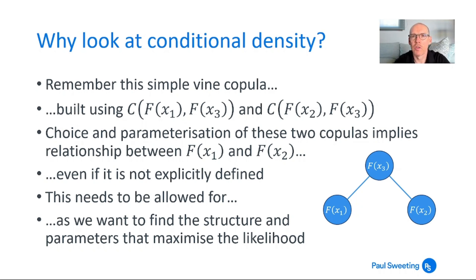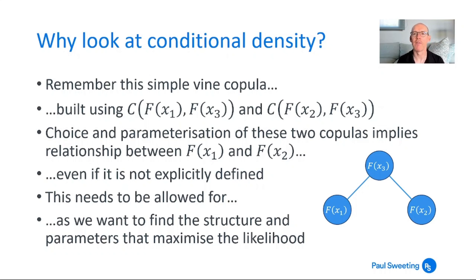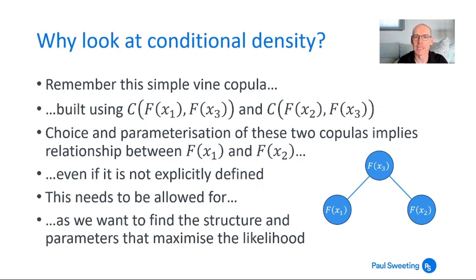So why might we want to look at conditional density? The easiest way to understand this is to look at a very simple vine copula we've already talked about a little, which starts with x3 in the middle and joins that to both x1 and x2. So we've got f(x1) and f(x2) both joined to f(x3), and they're joined by copulas: c(F(x1), F(x3)) and c(F(x2), F(x3)). Now when we're building a vine copula, we're specifying those two pair copulas. Even though that's the pair copulas we're specifying, this structure does imply a relationship between F(x1) and F(x2), even if we haven't explicitly defined it at the outset.